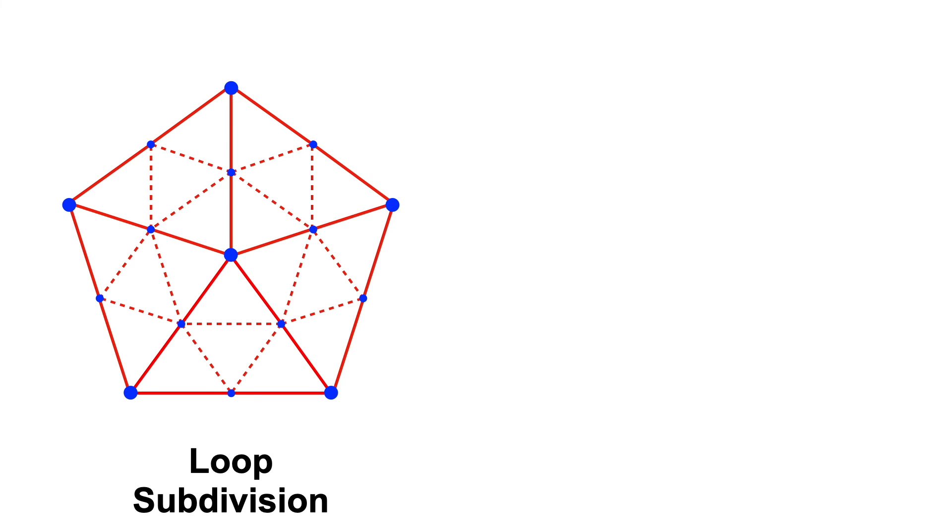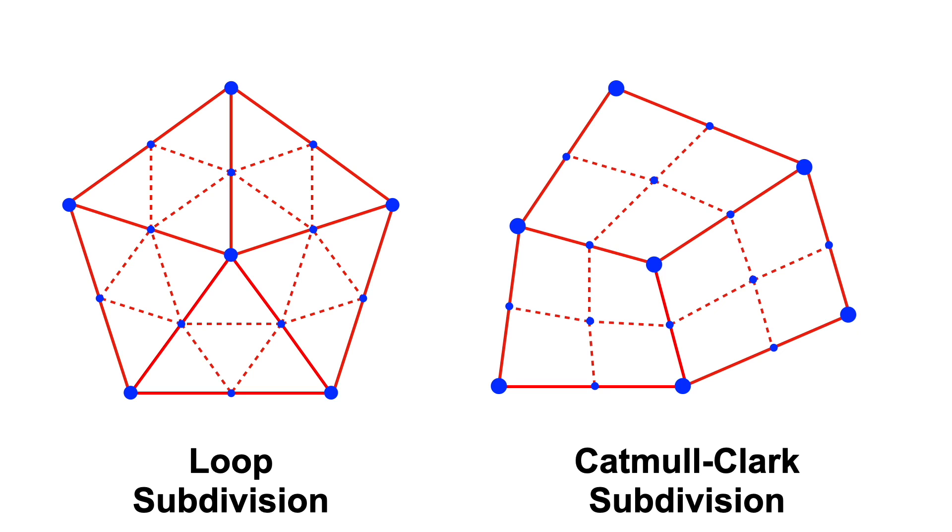What we just described is called loop subdivision, a popular choice for triangular meshes. For quad meshes, a similar subdivision approach called Catmull-Clark is more common.